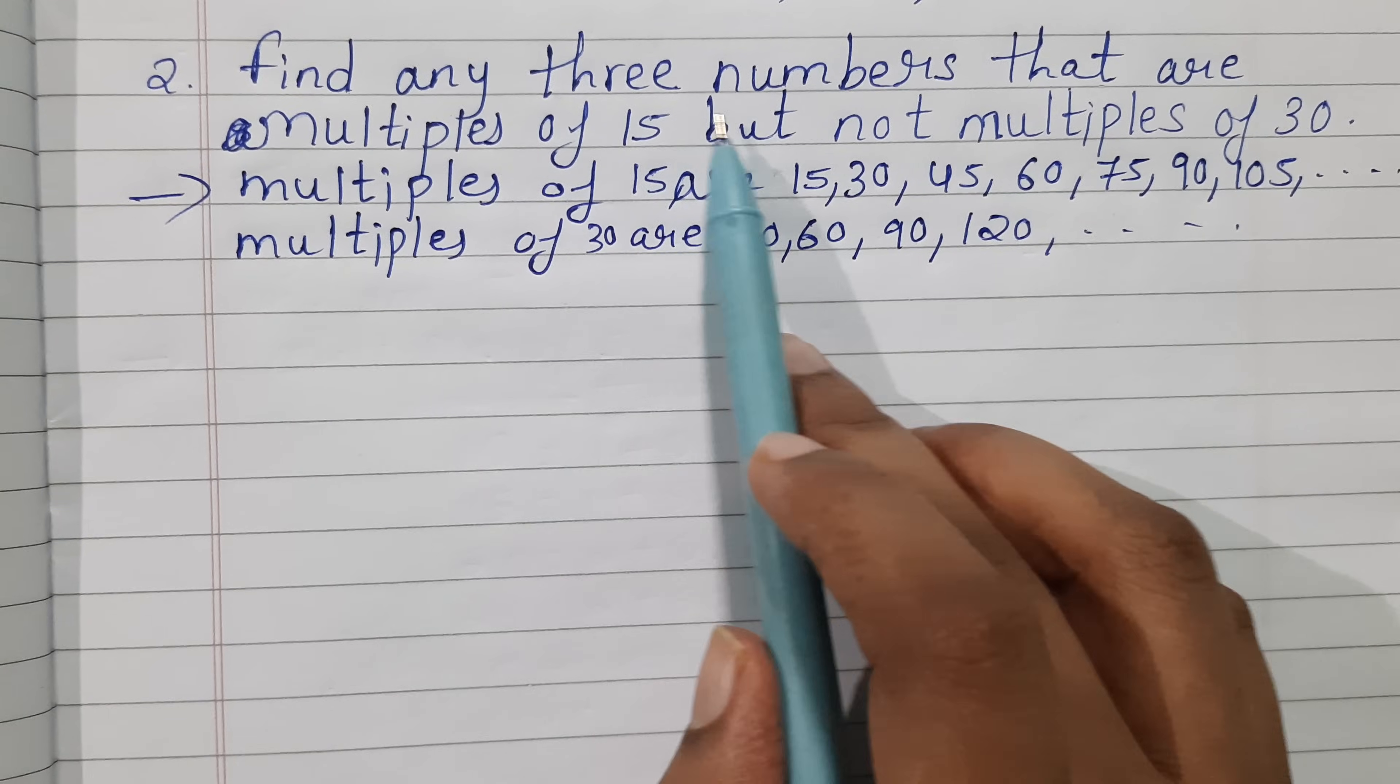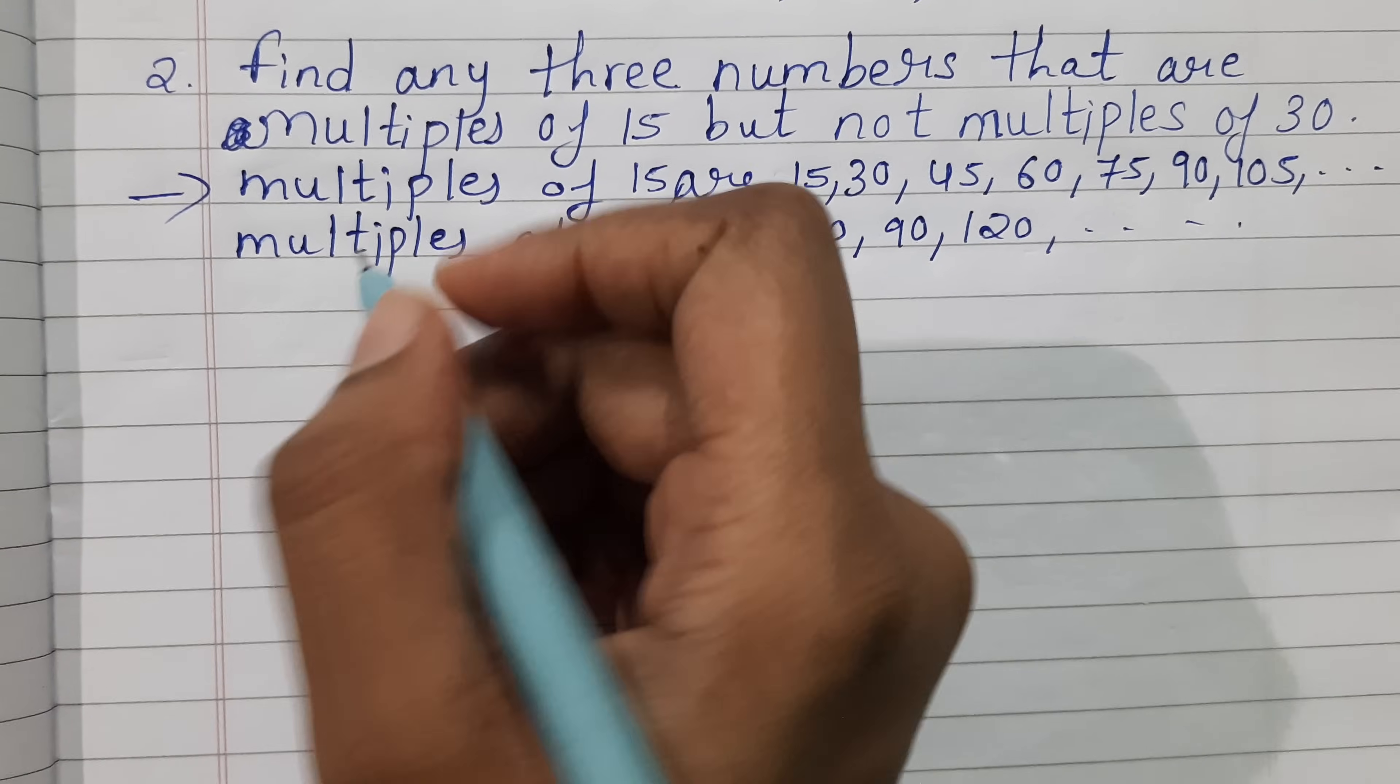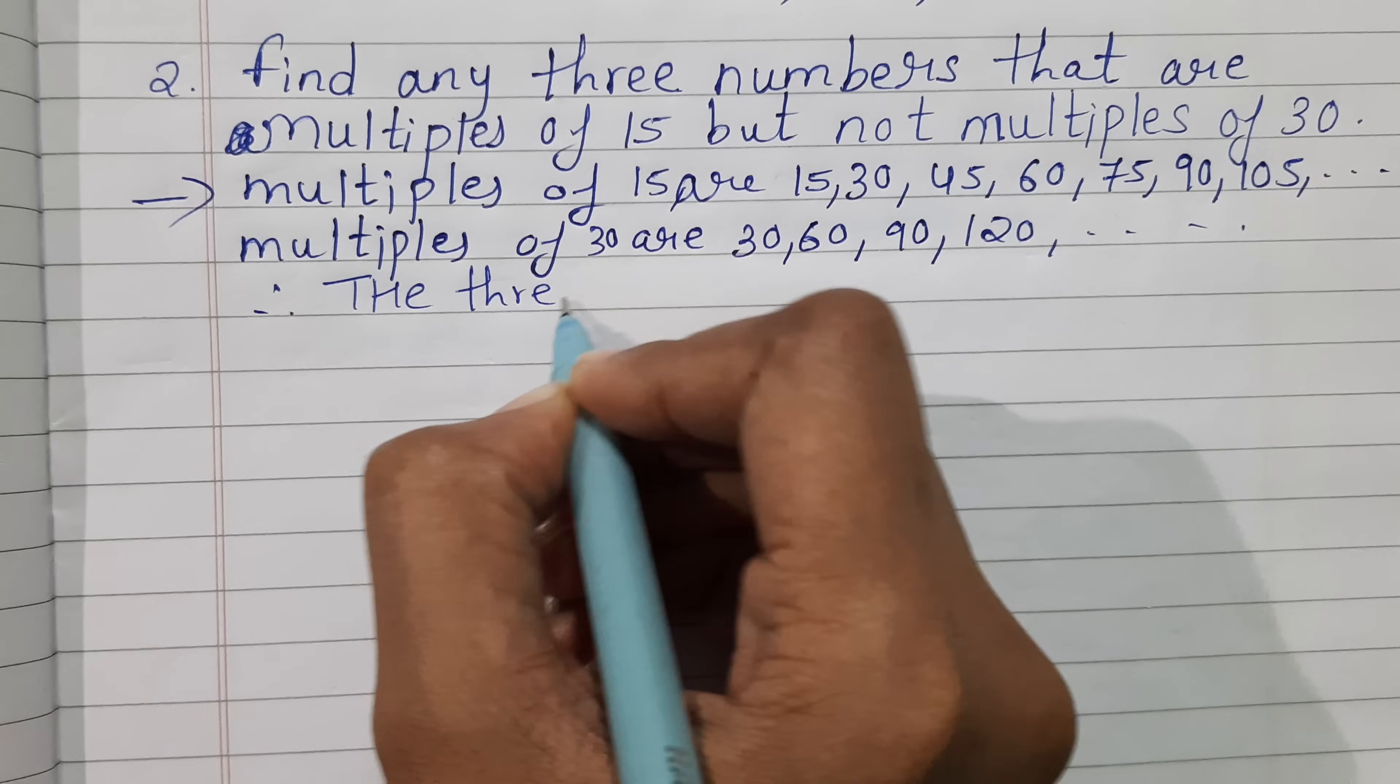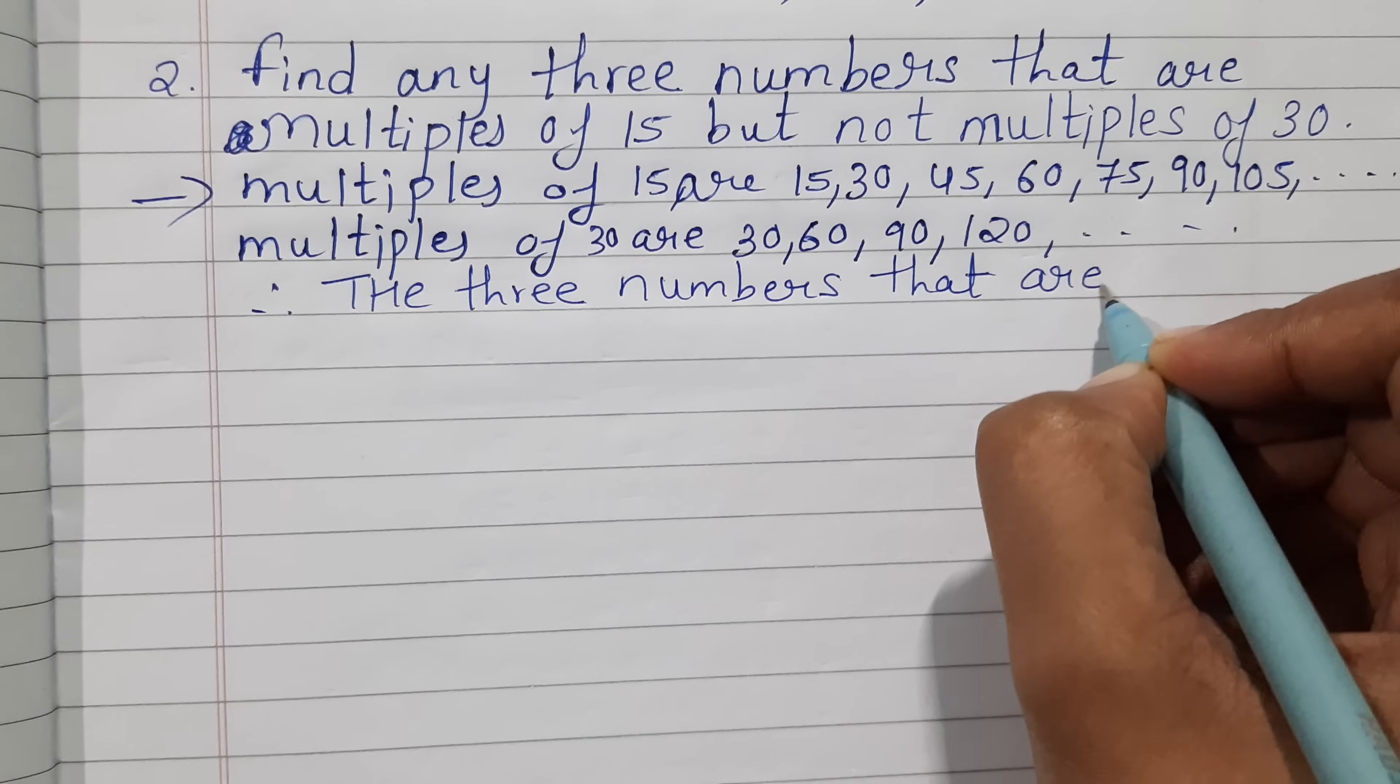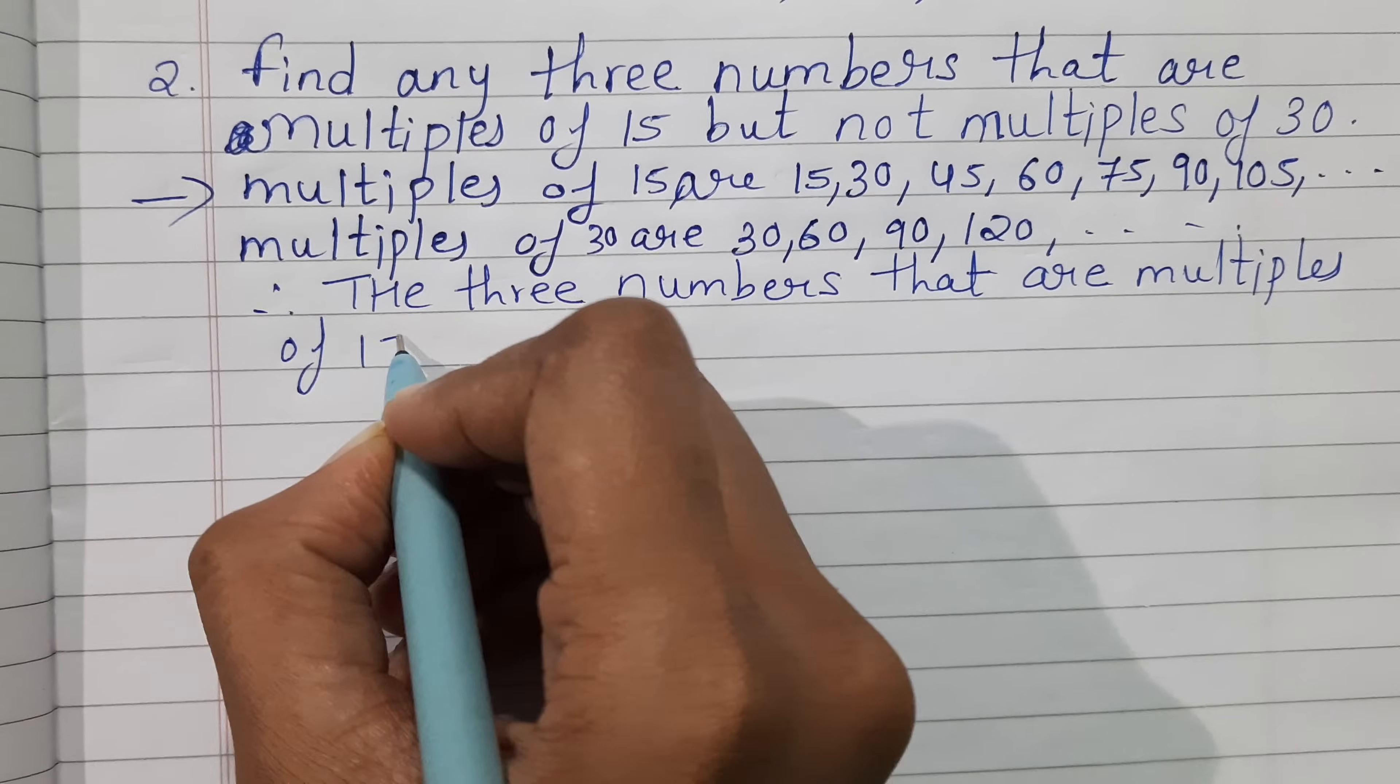So you just have to find any 3 numbers that are multiples of 15 but not multiples of 30. Therefore, I can write down the final statement: the 3 numbers that are multiples of 15 but